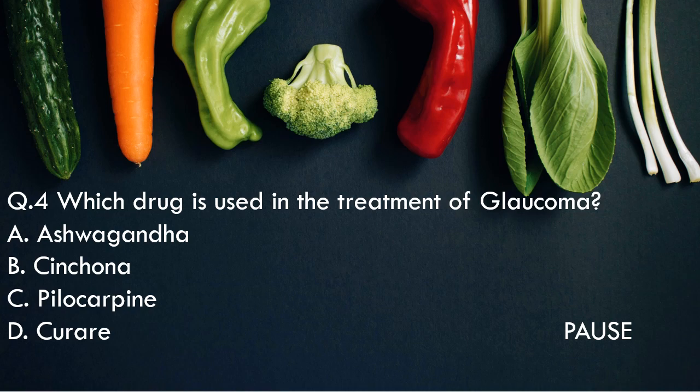Question 4: Which drug is used in the treatment of glaucoma? Option A, Ashwagandha. Option B, Cinchona. Option C, Pilocarpine. And option D, Curare. And the right answer is option C, Pilocarpine. So Pilocarpine is used in the treatment of glaucoma.